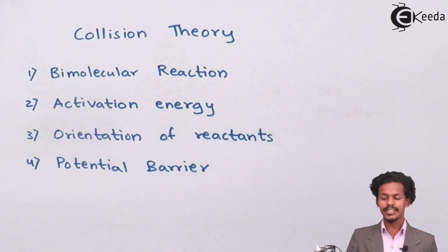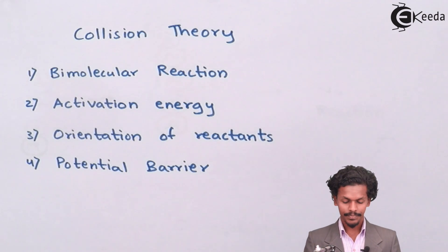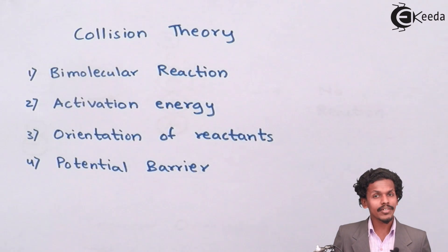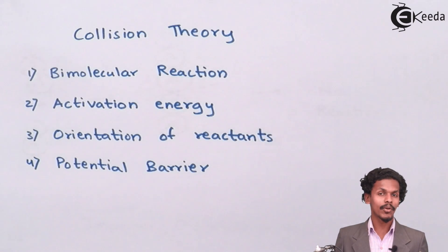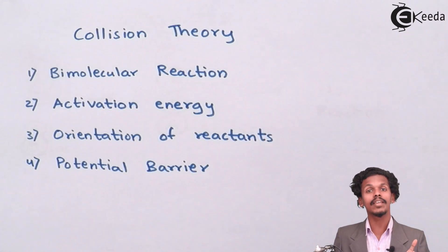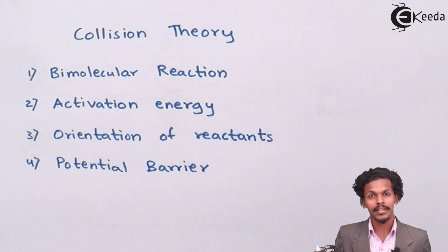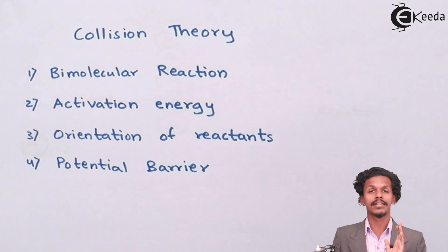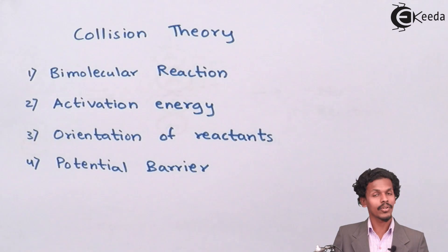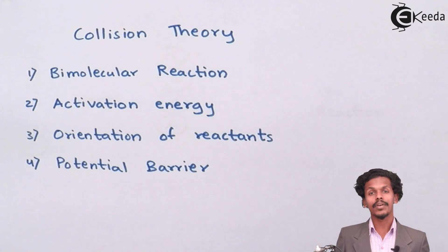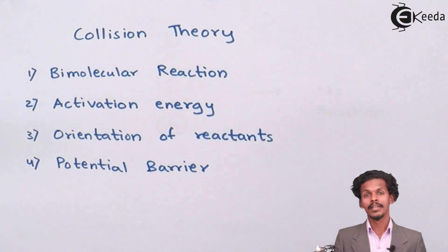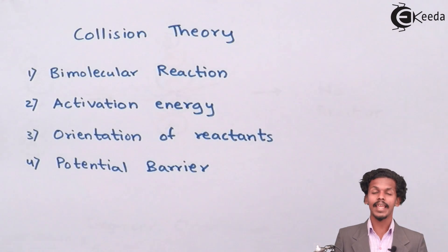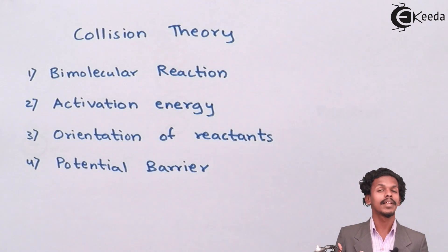For bimolecular reactions, if we consider A and B, or two molecules of A, that is a bimolecular reaction. If A alone gives a product, that cannot happen under collision theory — it applies only to first-order reactions. Collision theory is always limited to bimolecular reactions only, where for instance A and B collide with each other to form a product.